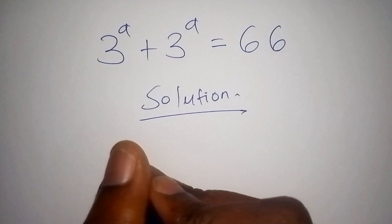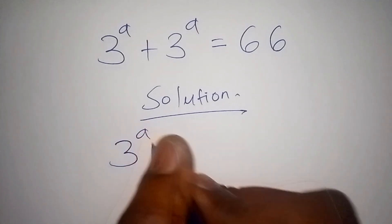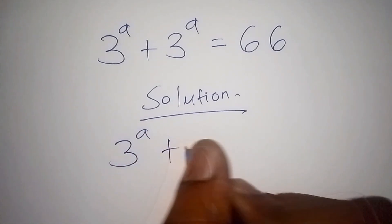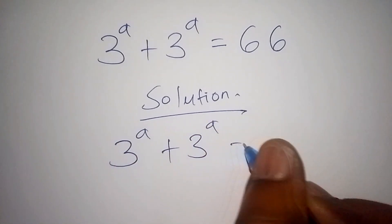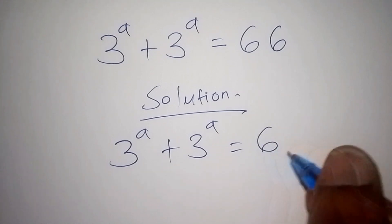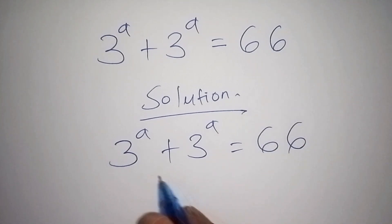So what we shall have is: 3 to the power of a, plus 3 to the power of a, is equal to 66. We are asked to find the value of a.